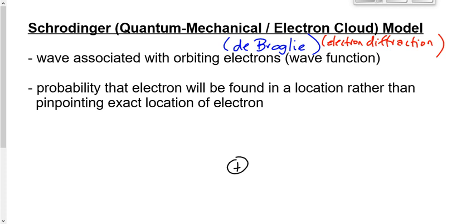So these electrons end up not being in a specific position, but they end up being in a cloud.